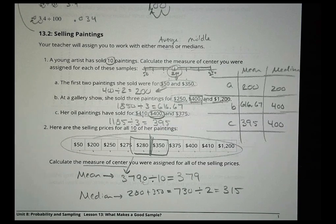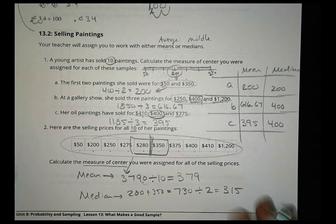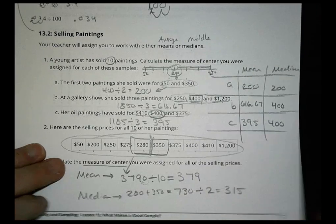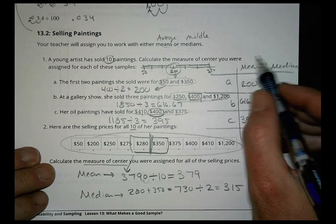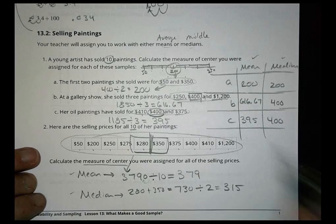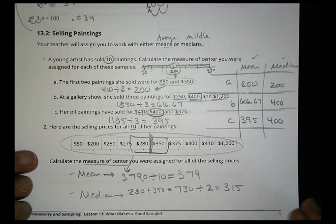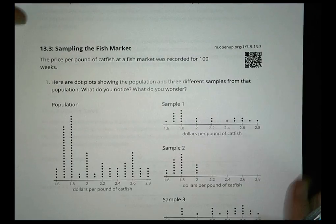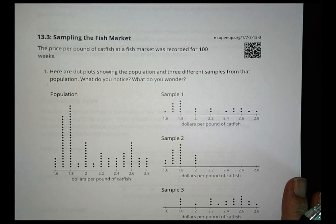Those are our measures of center using mean and median. Normally in class you'd compare with neighbors since you were each assigned only one measure, but here we did both. Now let's look at the fish market problem.